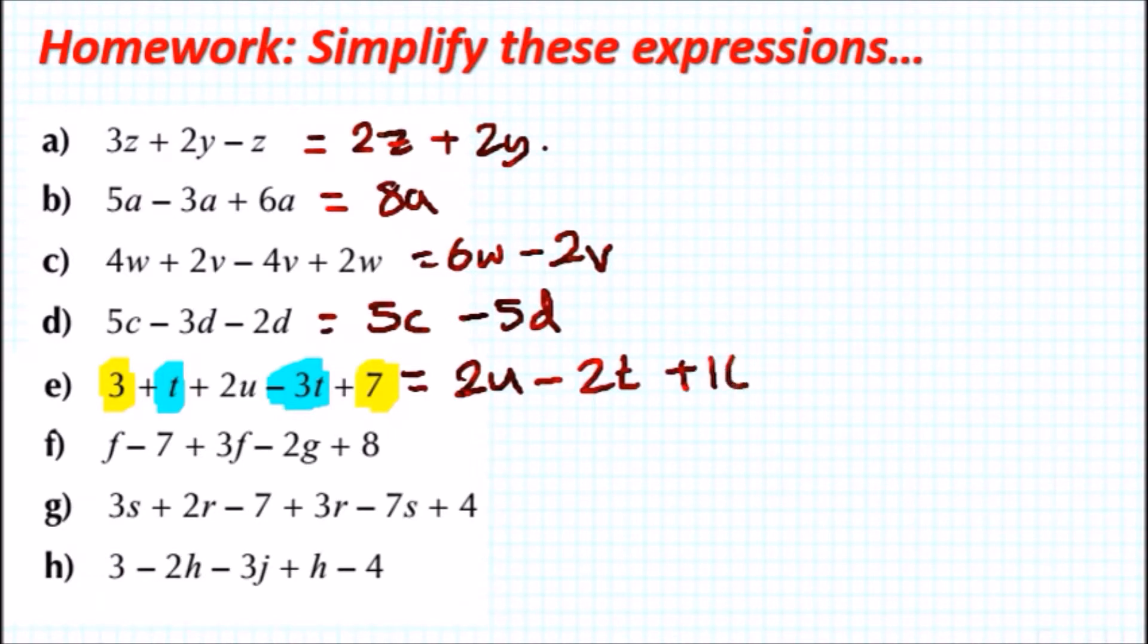The same thing applies with f. We've got f - 7 + 3f - 2g + 8. So let's start with the f's. We've got f + 3f will give us 4f.